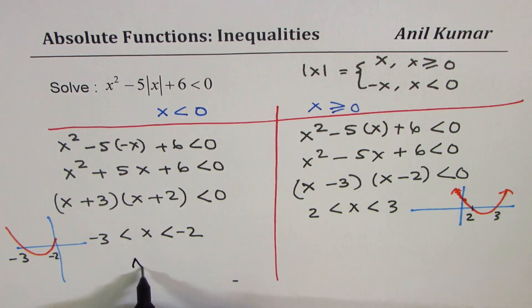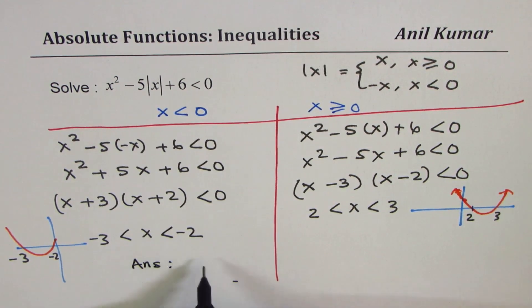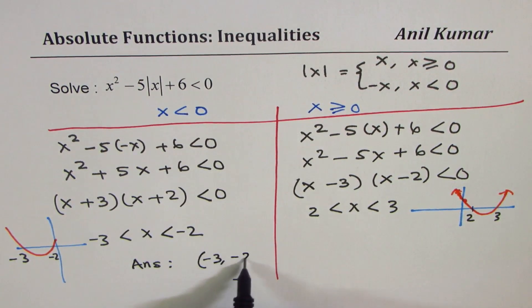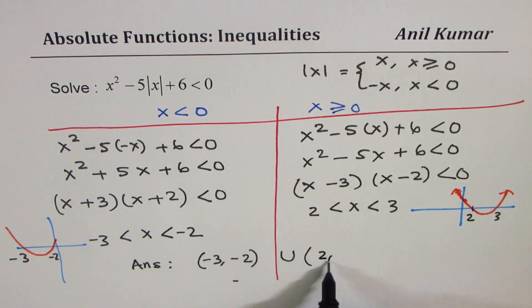Here is the answer: x is between minus 3 to minus 2 union 2 to 3.